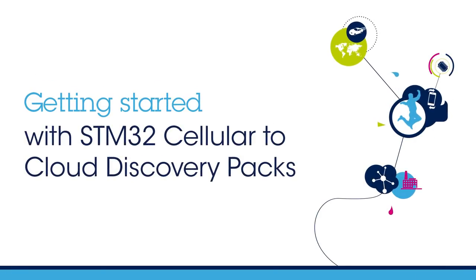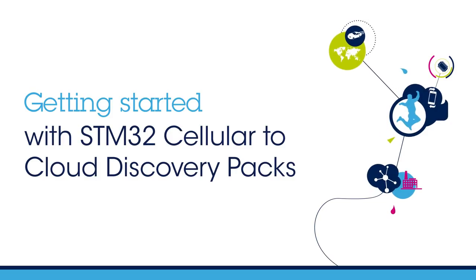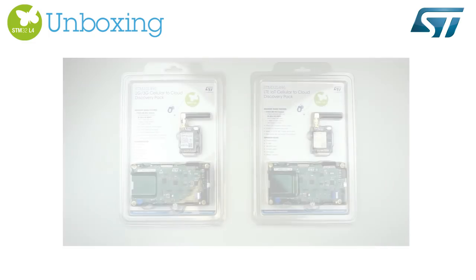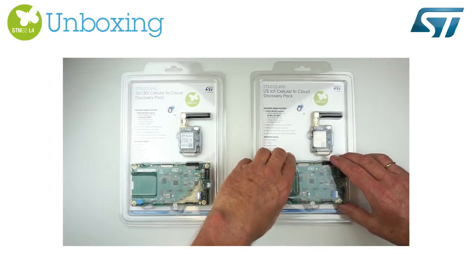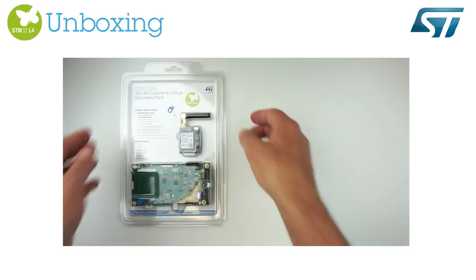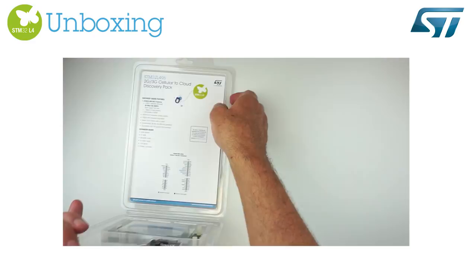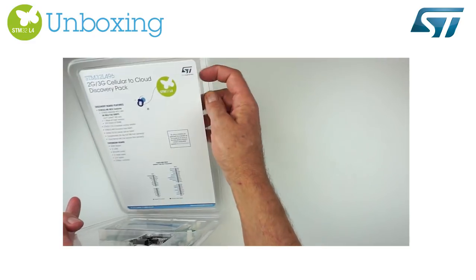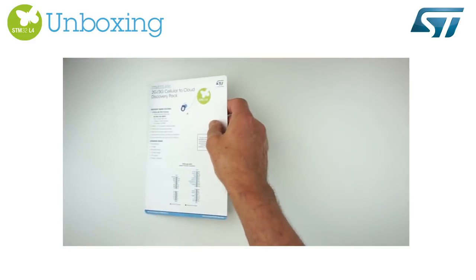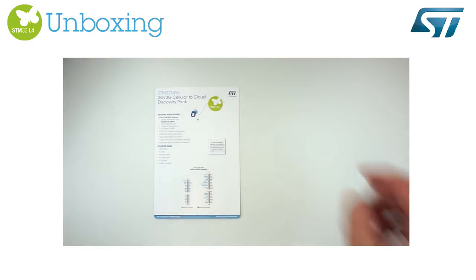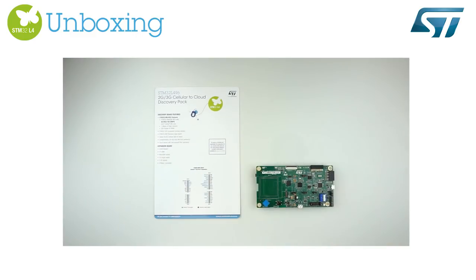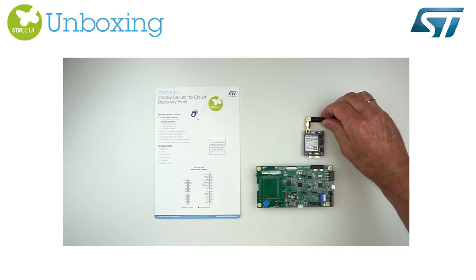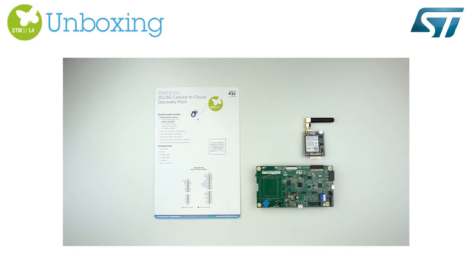Hello and welcome to this STM32 Cellular to Cloud Discovery Packs video. There are two Discovery Packs available to get started with. Let's unbox one of them. Please take out the insert card for more information. This is the STM32L496 Discovery Baseboard and the Cellular Add-on Board with Antenna.